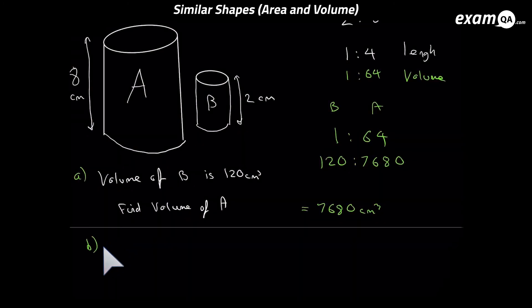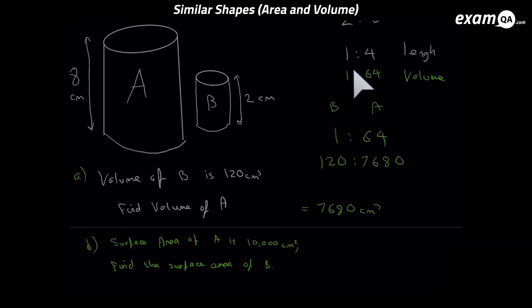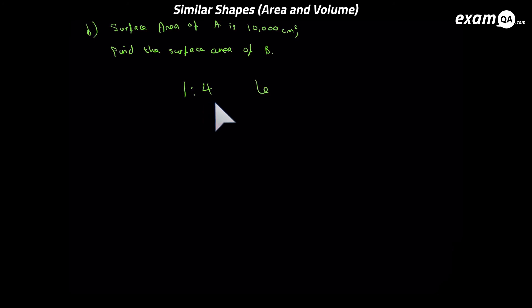Now part B is working surface area. It tells us the surface area of A is 10,000, but it wants us to work out the surface area of B. Now we're going to have to get the area ratio. So in the question it gave us the length ratio, so we're going to use that to get our area ratio. So the length ratio was 1 to 4 after it was simplified down. Now squaring it gives us our area ratio, which we can use on our surface area. So 1 squared is 1 and 4 squared is 16. That's for area.